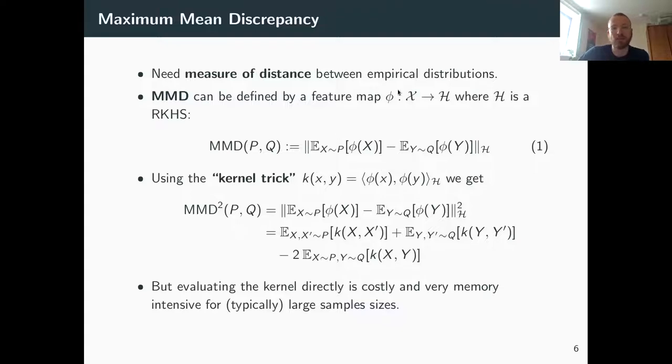Then it's just the norm here between the differences of the expectation of the samples projected with this feature map. And the question then that comes up is which functions to choose as phi.